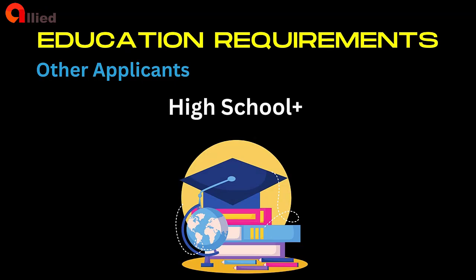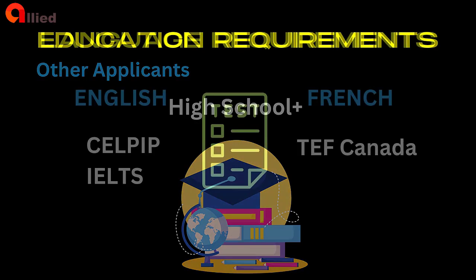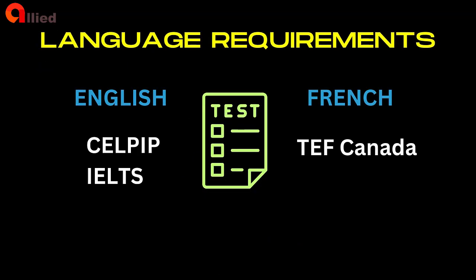All applicants except Post-Graduation Work Permit holders must have completed a minimum of high school education equivalent to Canadian standards. If education was completed outside Canada, you must provide a copy of an Educational Credential Assessment (ECA) issued by an organization designated by IRCC for your highest level of education. If your ECA report shows that your credential is not equal to completion of Canadian high school, or the foreign educational institution is not recognized, you do not meet the education requirement.